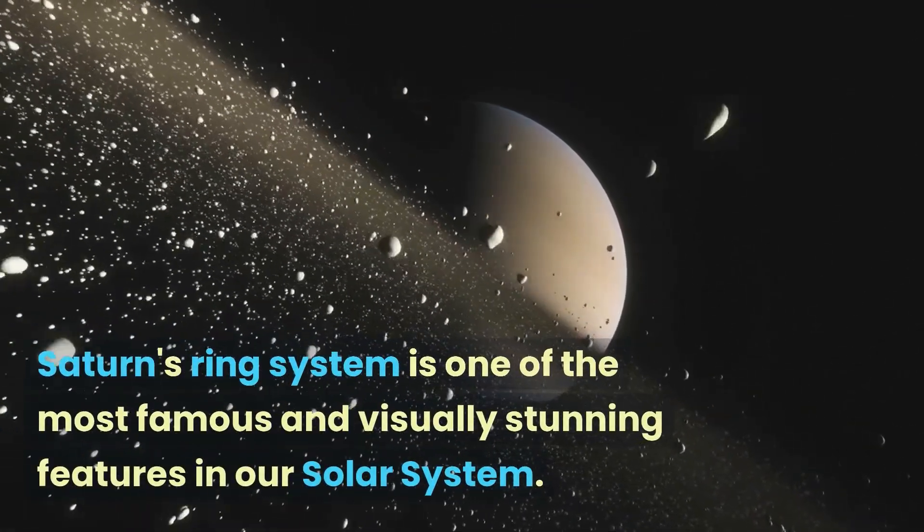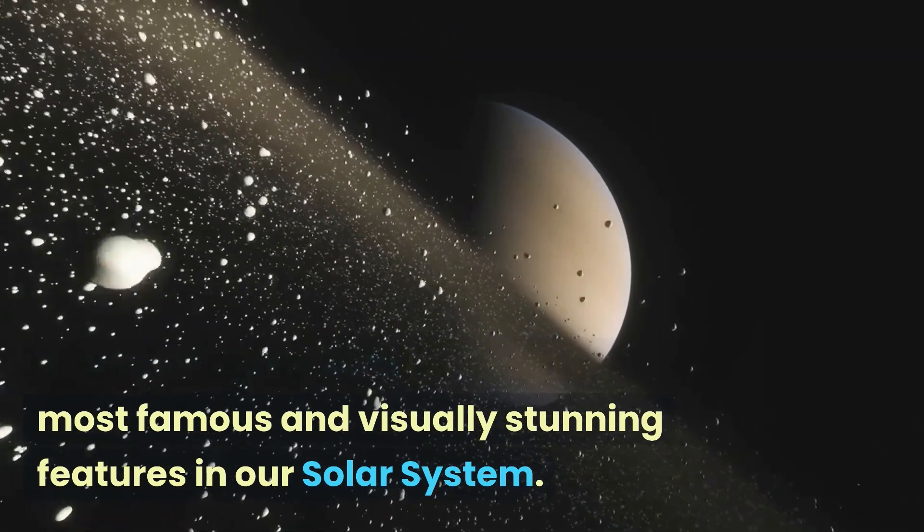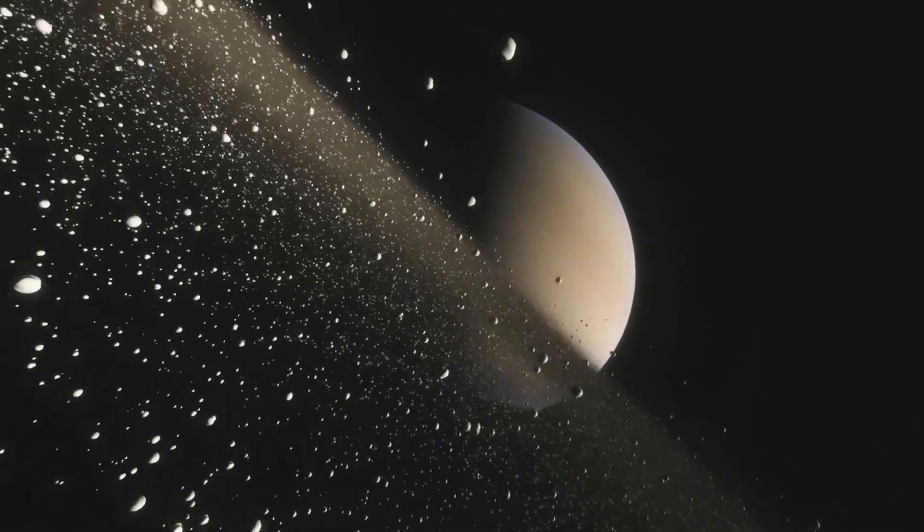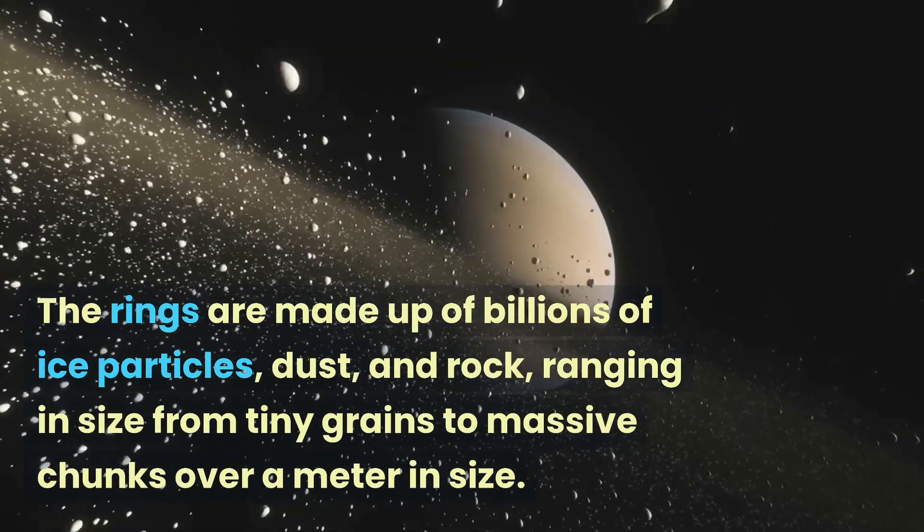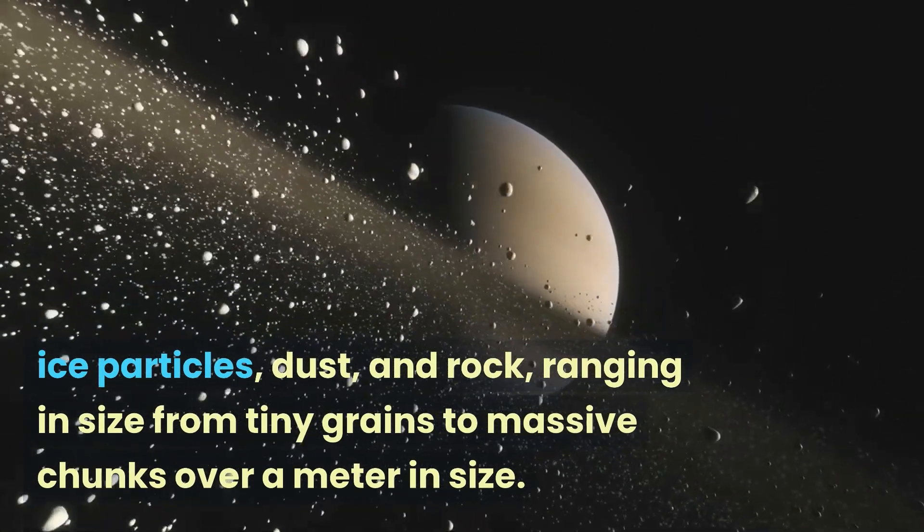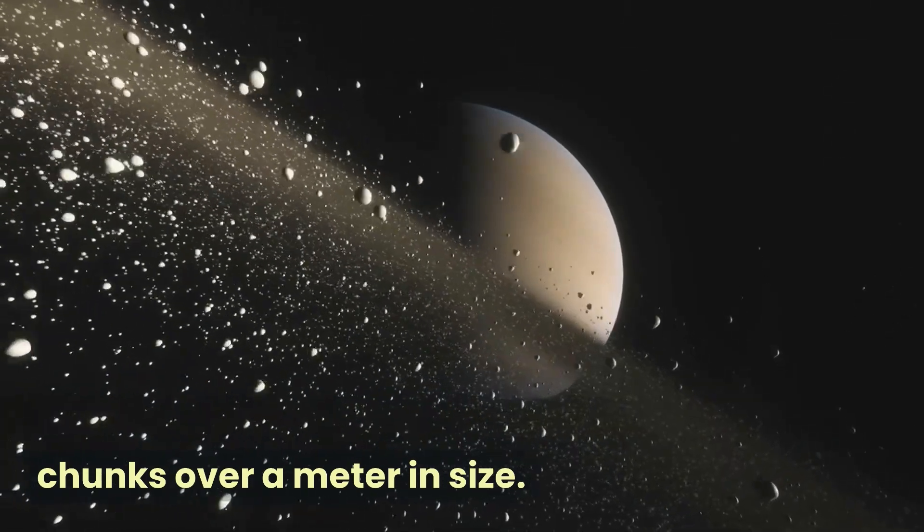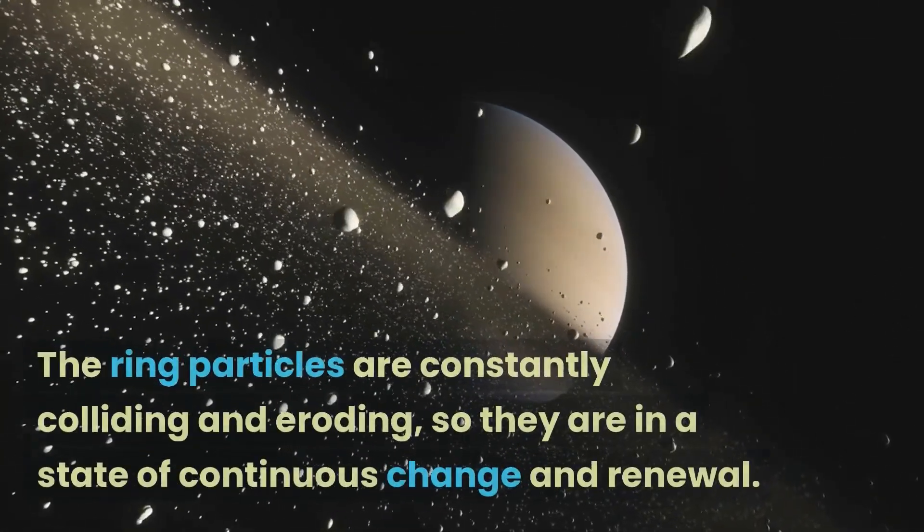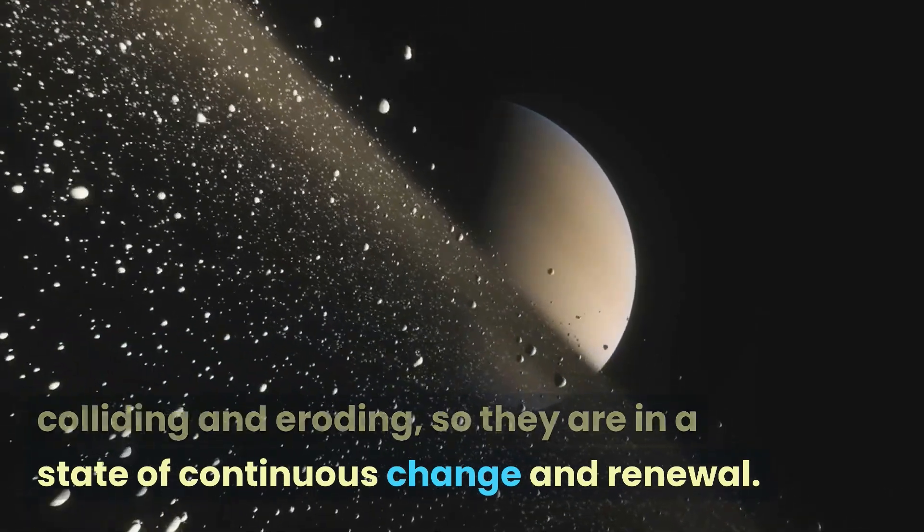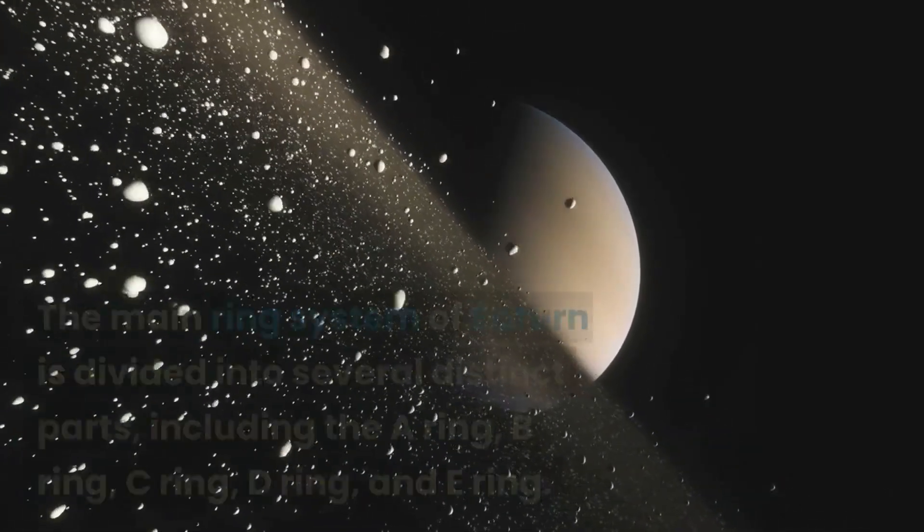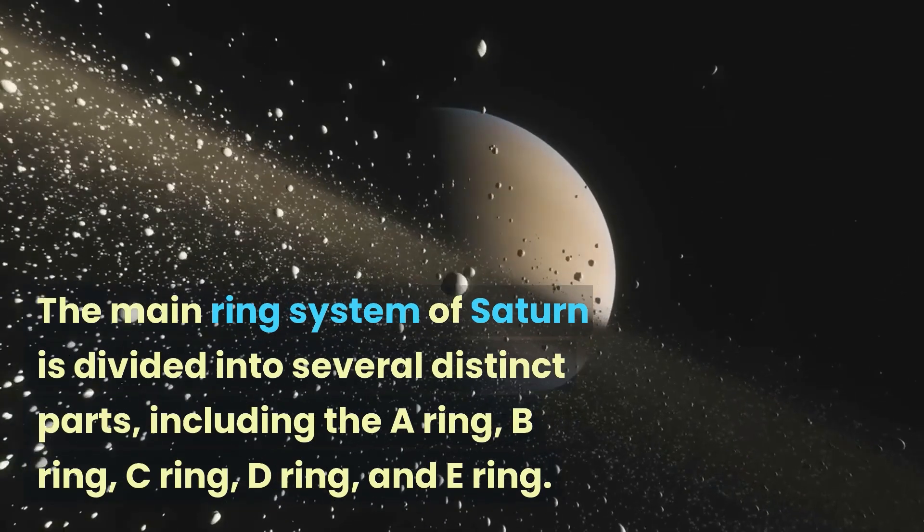Saturn's ring system is one of the most famous and visually stunning features in our solar system. The rings are made up of billions of ice particles, dust, and rock, ranging in size from tiny grains to massive chunks over a meter in size. The ring particles are constantly colliding and eroding, so they are in a state of continuous change and renewal.